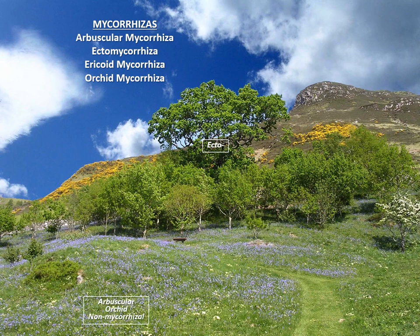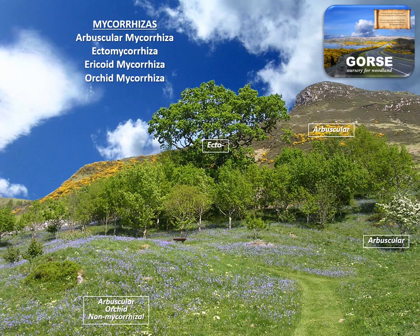Next, the meadow consisting of numerous species — many of them are arbuscular mycorrhizal. That includes the bluebells. Orchids present will have their own special mycorrhiza, while some species will have developed strategies for doing away with mycorrhizality altogether. A good number of trees in the region are also arbuscular mycorrhizal, and in this picture that includes hawthorn. Gorse, which paints the hillsides bright yellow in spring, is also arbuscular mycorrhizal.